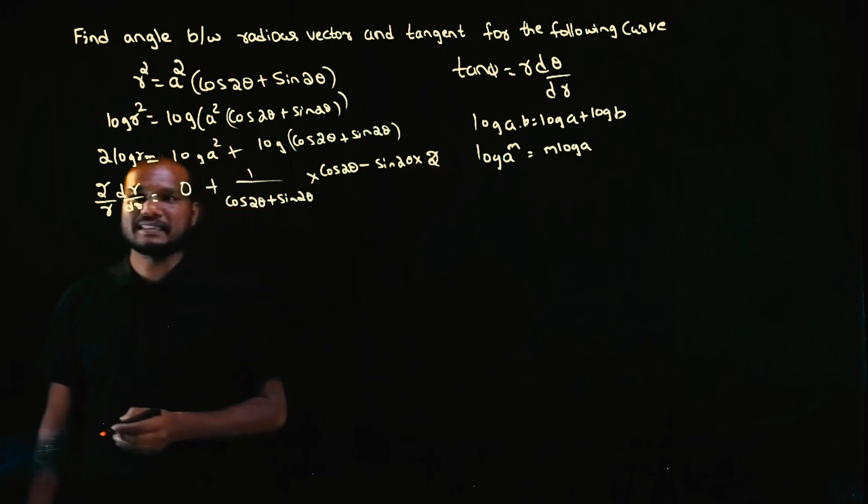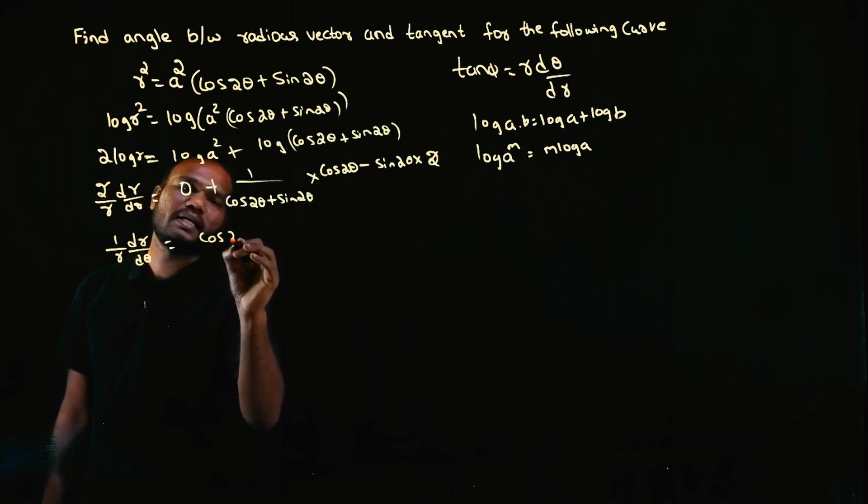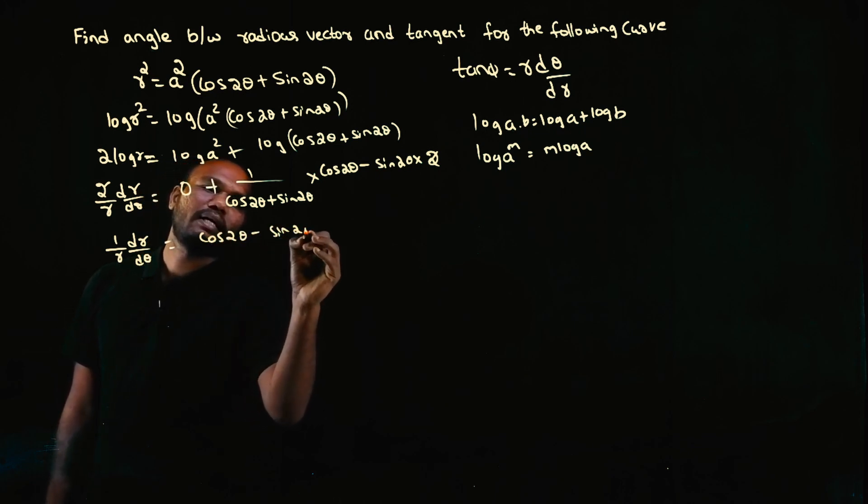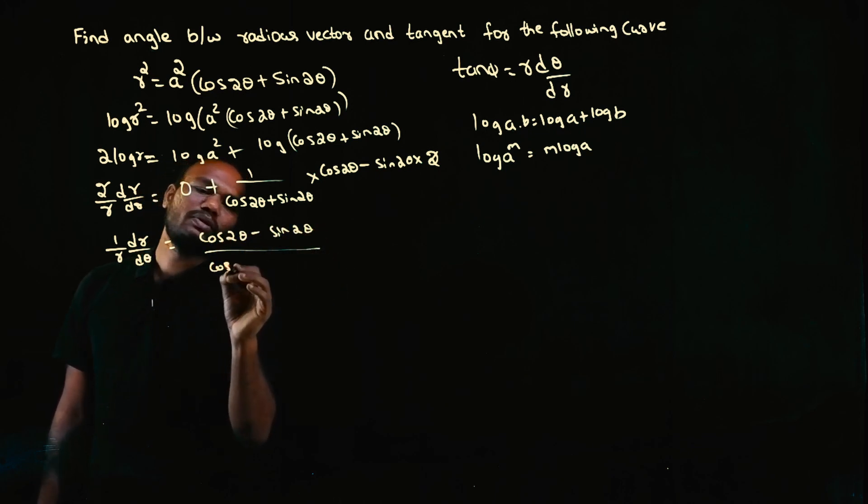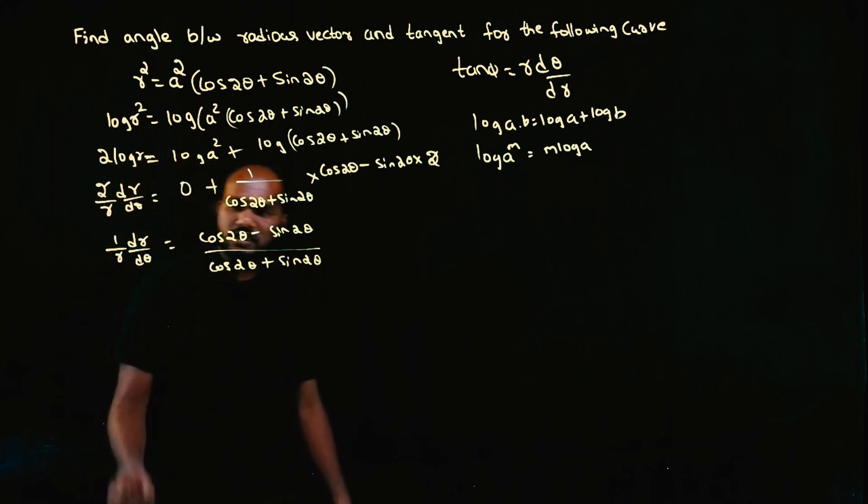So I'm left with 1/r dr/dθ equals (cos2θ - sin2θ) divided by (cos2θ + sin2θ).